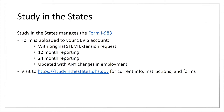Anytime you get a new employer while you're on that STEM 24-month extension, you're going to have to fill out Form I-983 from beginning to end, and then still make sure that you're completing the 12-month or 24-month reporting. If you're changing jobs, we do ask that you fill out the evaluation form even if you didn't complete that job to its full extent, because it helps us accurately track your evaluation at the time you left that employer.